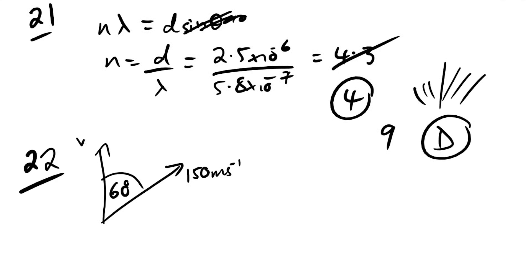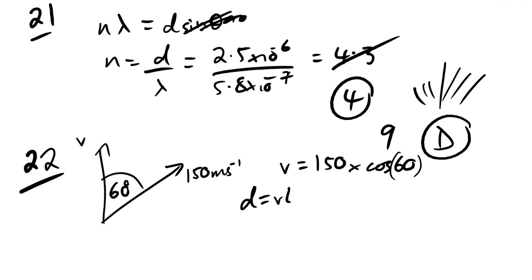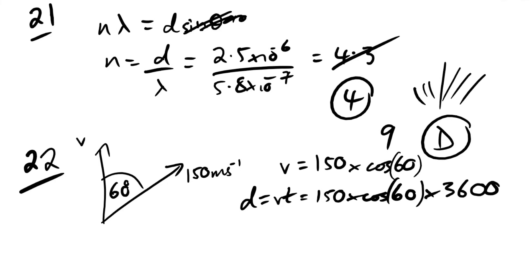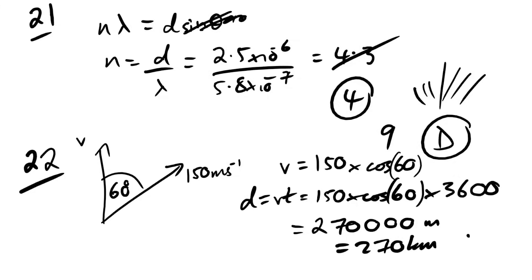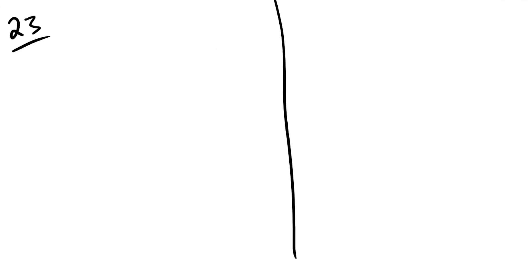Question 22: a plane travels at 150 km/h on a bearing 60° from north. The northward component of speed is 150×cos60°. Distance north = 150×cos60°×3600 = 270,000 m = 270 km. The answer is A.